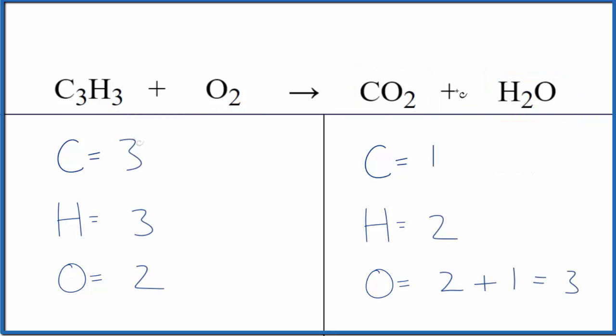Let's count the atoms up. And the only thing to be careful about, we have two oxygens here and one here. Two plus one, that equals three. So make sure you count all of the oxygens on the product side.